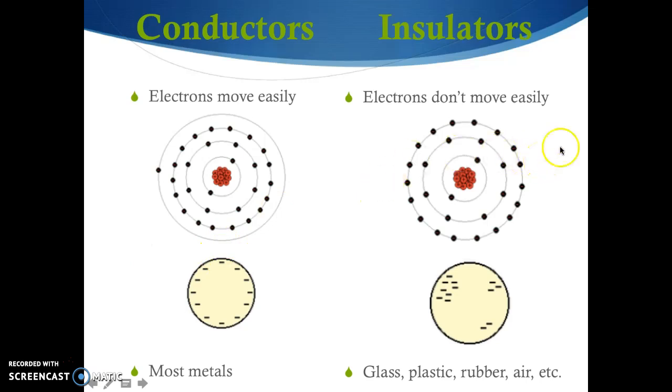Insulators, however, are materials where electrons do not move very easily. Examples of insulators are glass, plastic, rubber, air. And you'll notice looking at the atomic makeup for insulators. They're pretty complete. They don't really need an electron to complete one of their electron shells. And they don't have that free electron kind of hanging out there to give away.